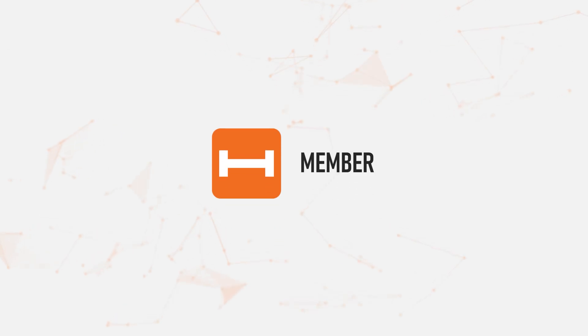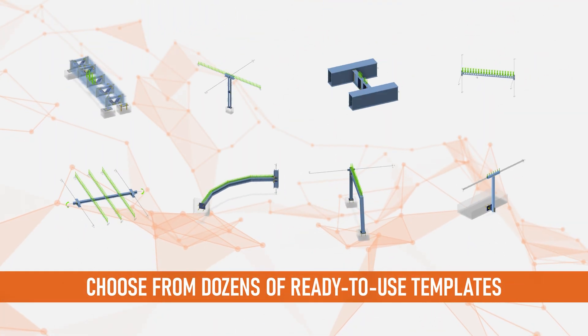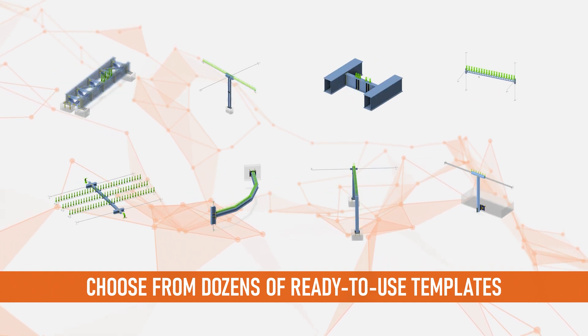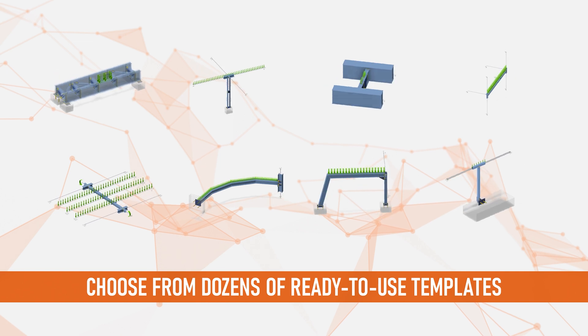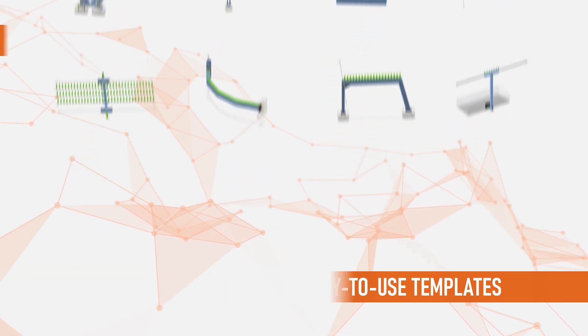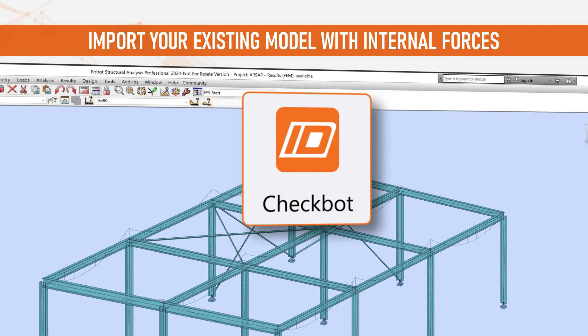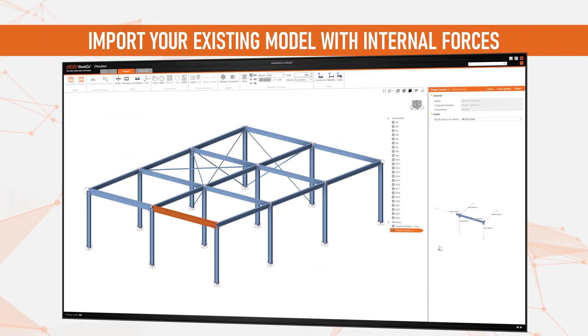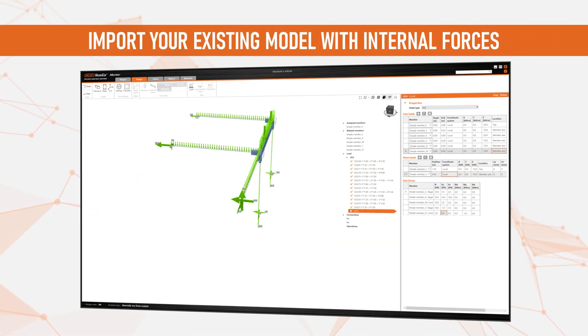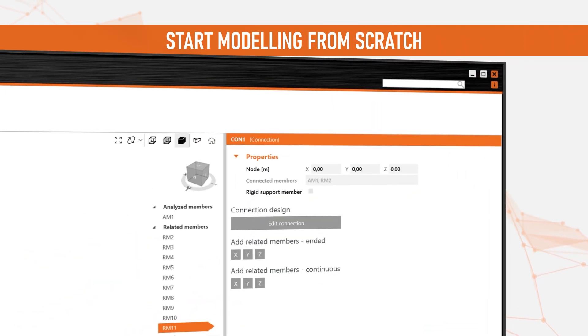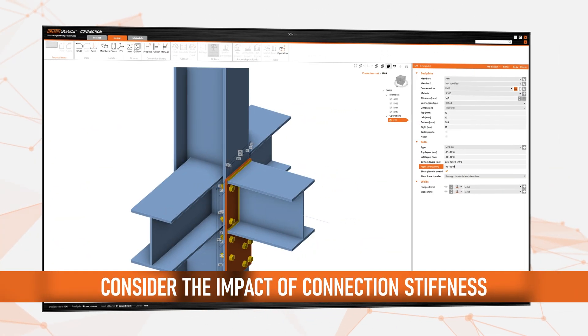React to change requests quickly and see the updated results and ensure buildability. Meet IdeaStatica Member, the only tool available that lets you use your original design without the need for hand modeling, allowing you to see the realistic behavior of your structure. Choose from dozens of ready-to-use templates, or simplify your workflow by importing your existing model with all internal forces. You can even start from scratch and model any general or critical member, including all related members as well as connections.